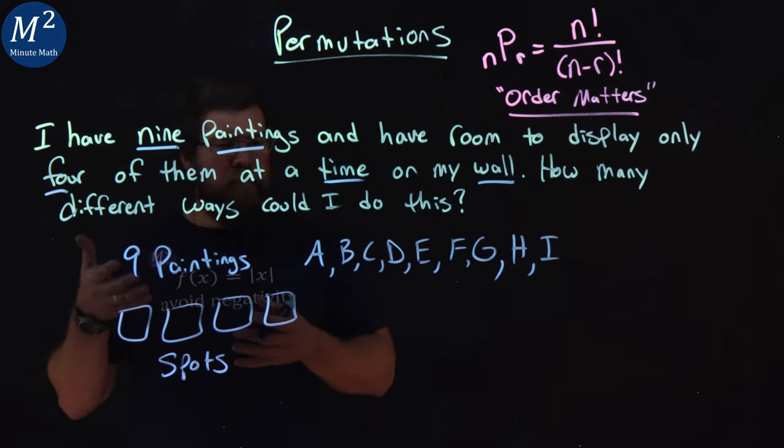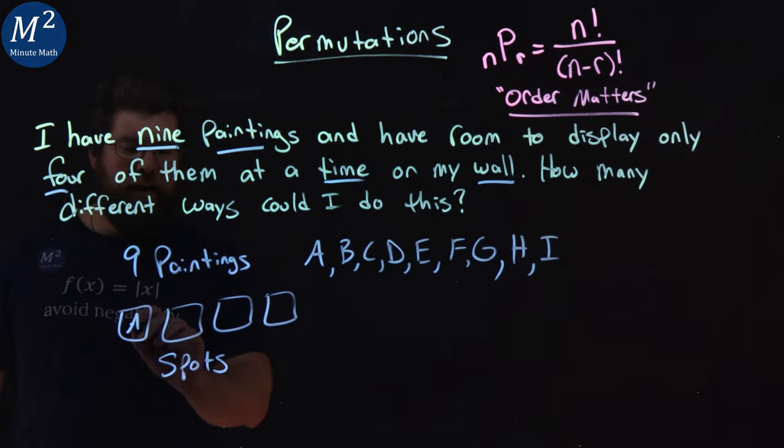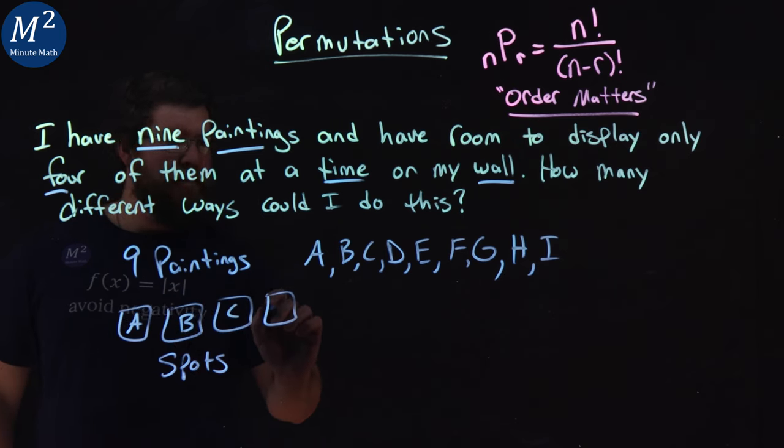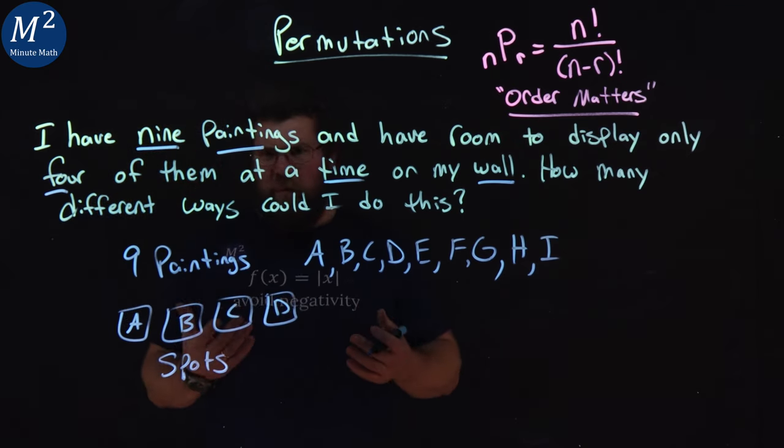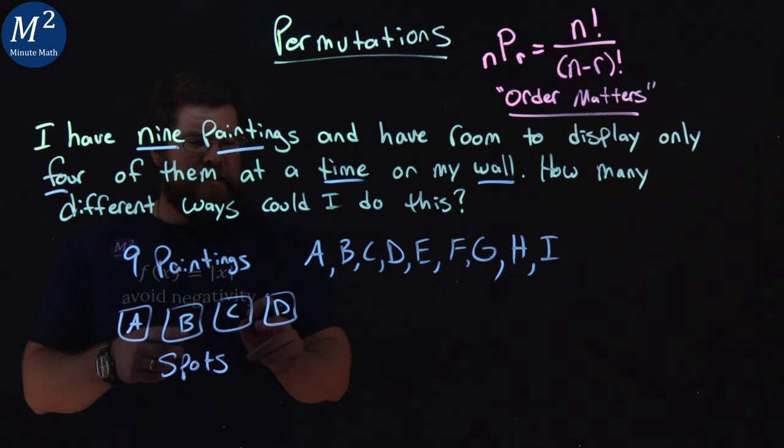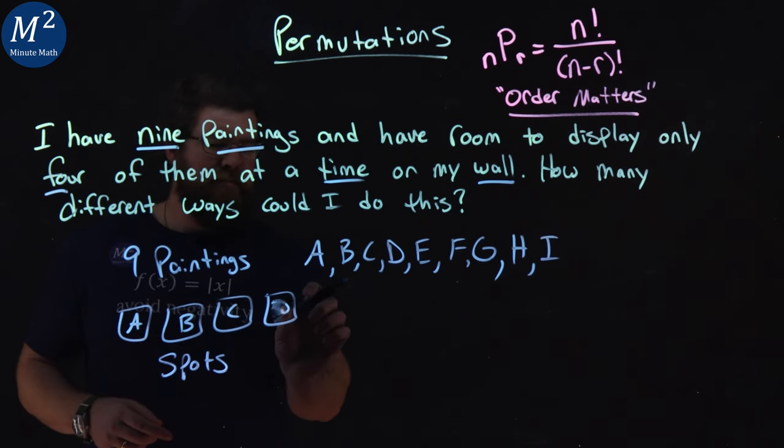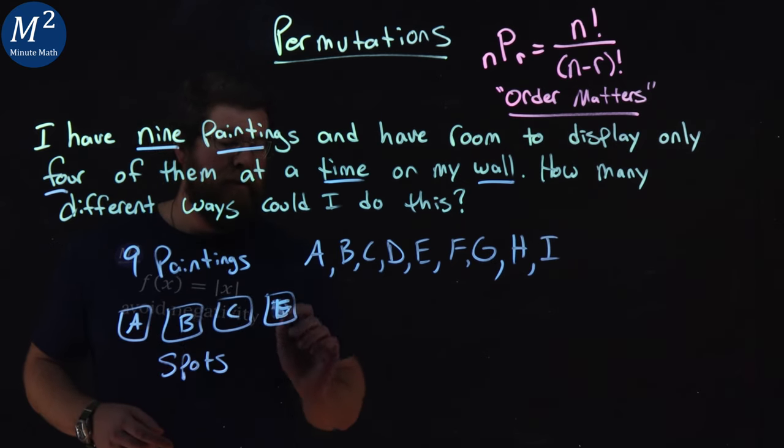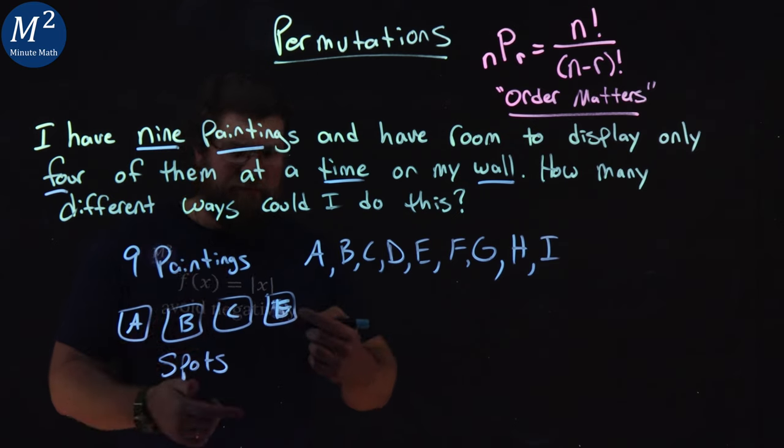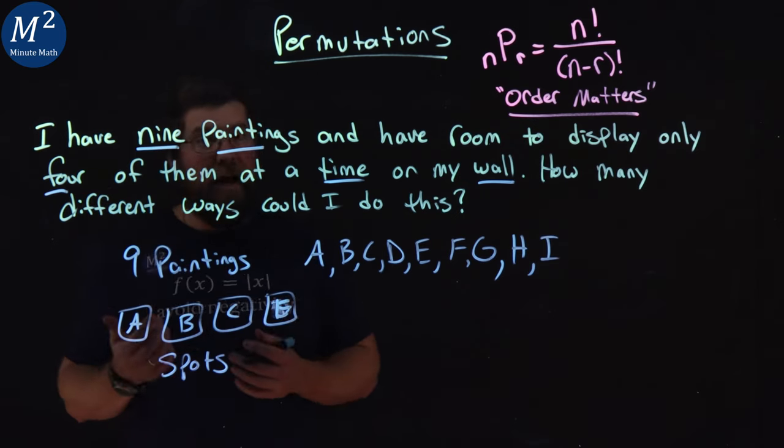And to visualize this, the spots on the wall, our first one would say is A, B, C, D on the wall. Or we have A, B, C instead of D, we have an E there. And you kind of get the idea. I mean, all these different combinations that can happen here.